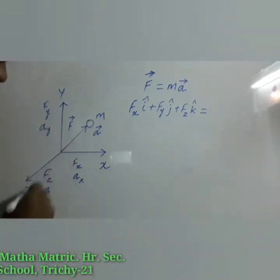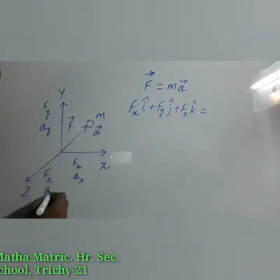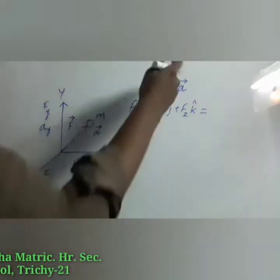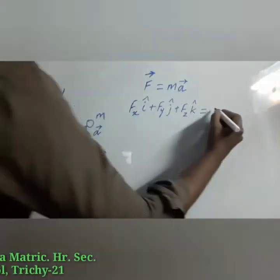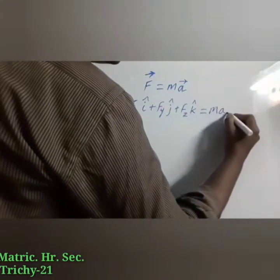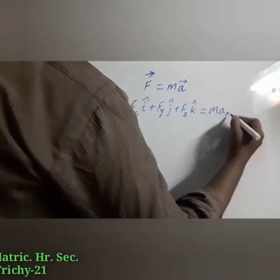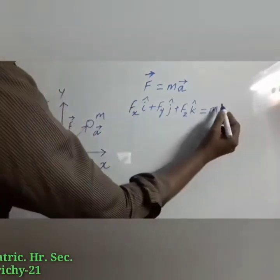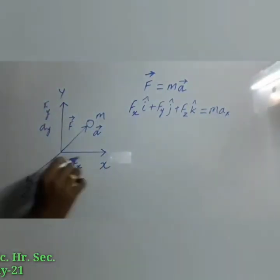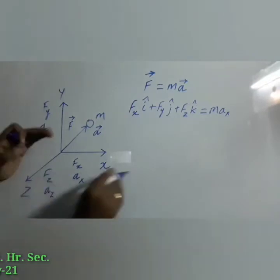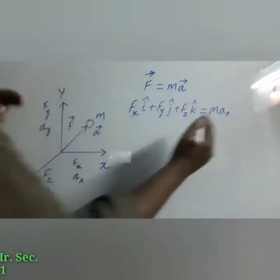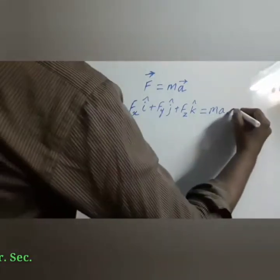Along the z-axis the acceleration component can be taken as az. Now m·ax — it is a magnitude only. Mass and ax is the component in the x-axis, which is a numerical value. To convert that into a vector quantity, you have to multiply with the unit vector.